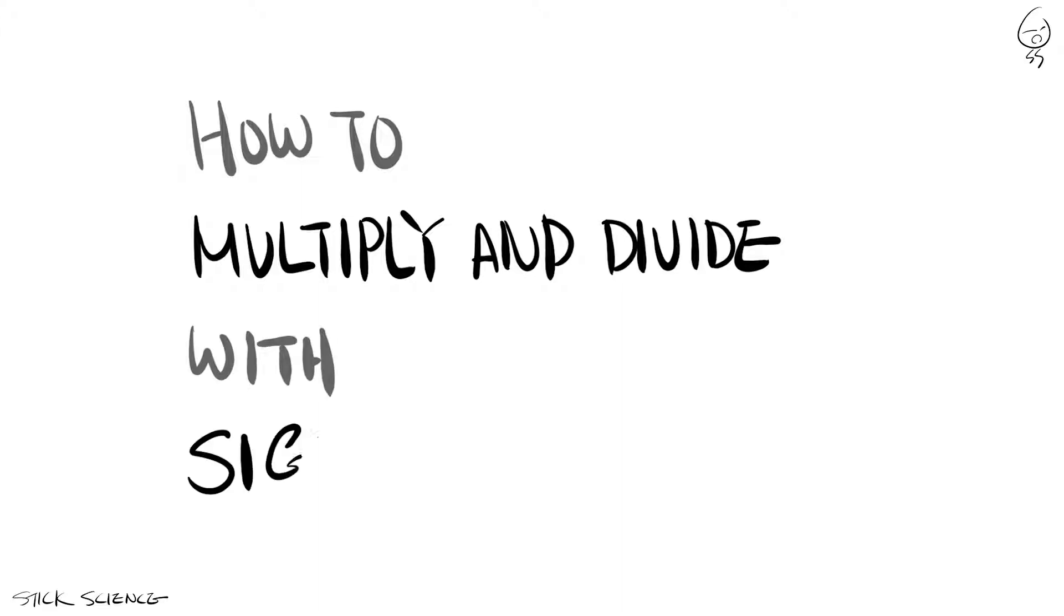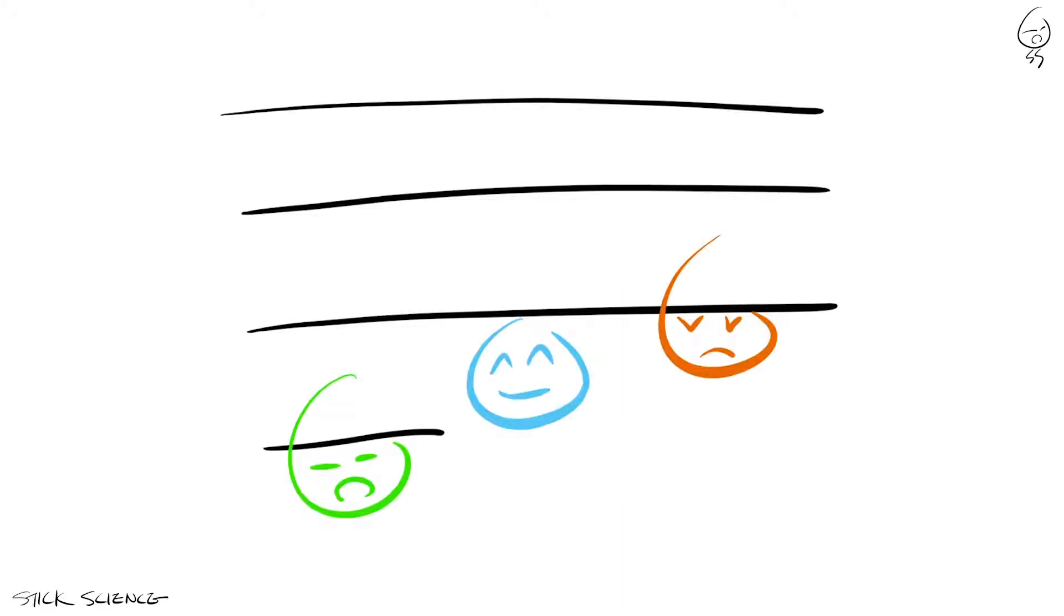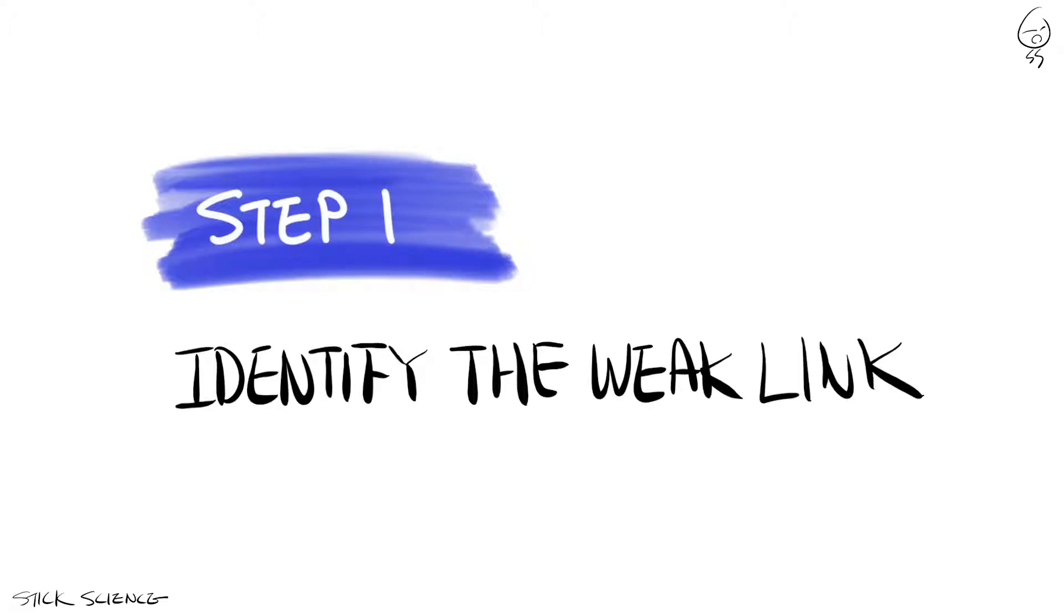So you want to multiply and divide numbers with significant figures. Well it's easy as do, re, mi. Step one, identify the weak link.